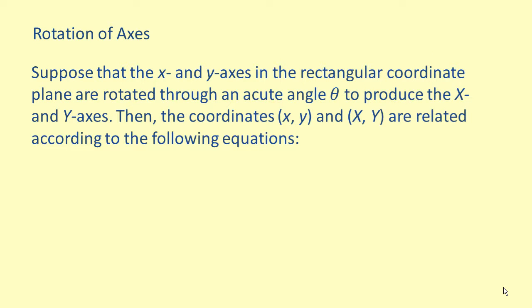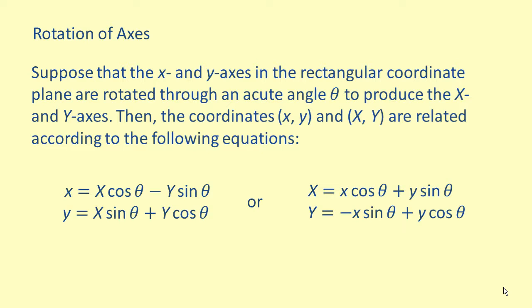Suppose that the x and y axes in the rectangular coordinate plane are rotated through an acute angle theta to produce the capital X and capital Y axes. We can solve for capital X and capital Y in terms of x and y. The coordinates xy and capital XY are related by: x equals capital X times cosine of theta minus capital Y times sine of theta, and y equals capital X times sine of theta plus capital Y times cosine of theta. Or equivalently, capital X equals x times cosine of theta plus y times sine of theta, and capital Y equals negative x times sine of theta plus y times cosine of theta.